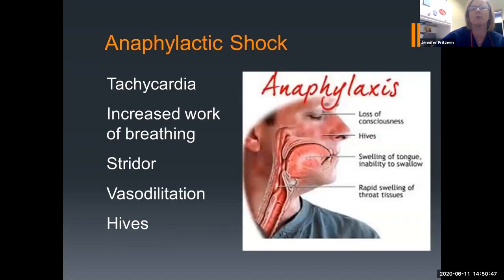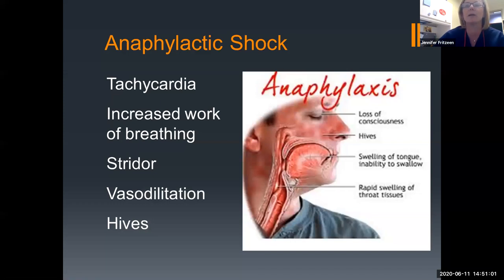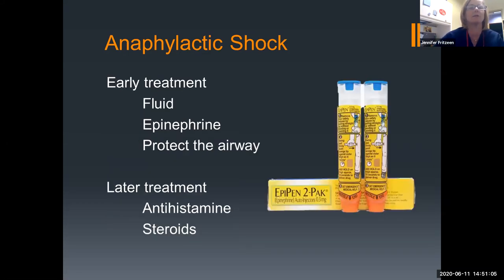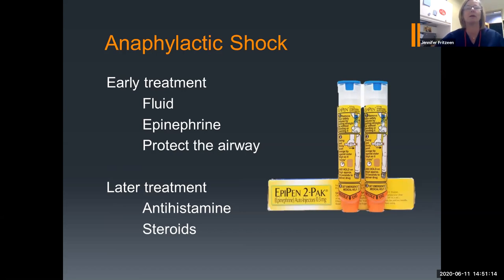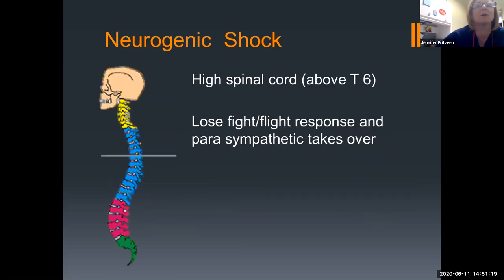Anaphylactic shock — we don't see a lot, but we could with a trauma patient. Same as septic shock: tachycardic, increased work of breathing. Here, we may see stridor due to swelling of the tongue. We'll have that same vasodilation and hives. Treatment: fluid and epinephrine in order to address the vasodilation — epi works appropriately here because the vasodilation is the problem. Protect the airway, and later treatment would be antihistamines and steroids.